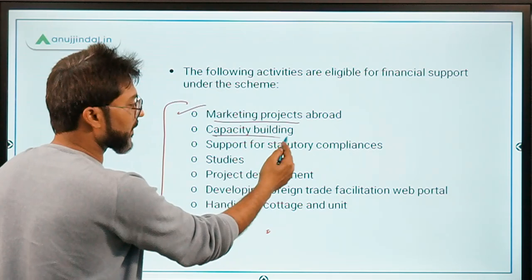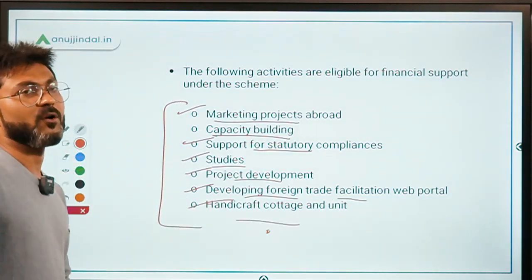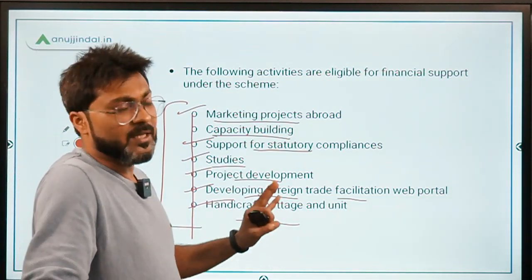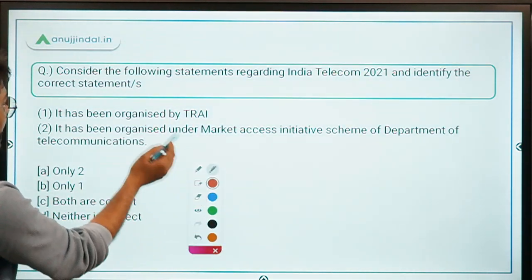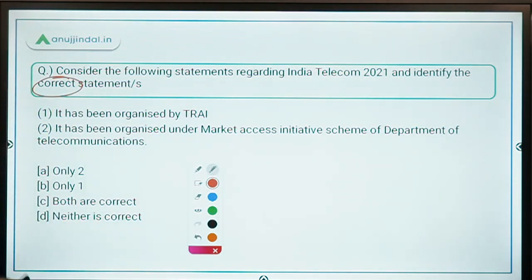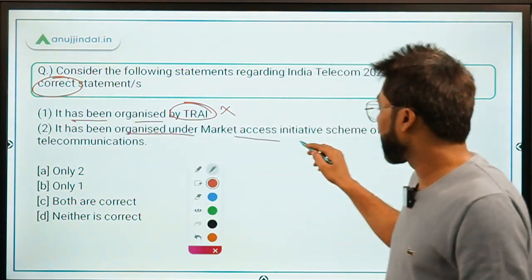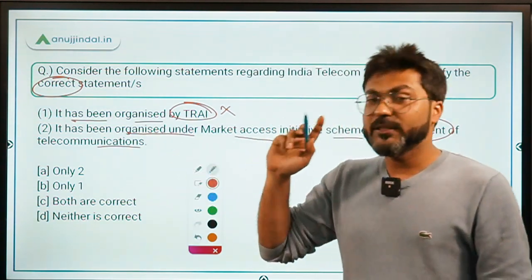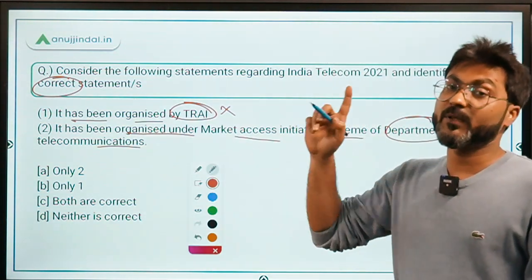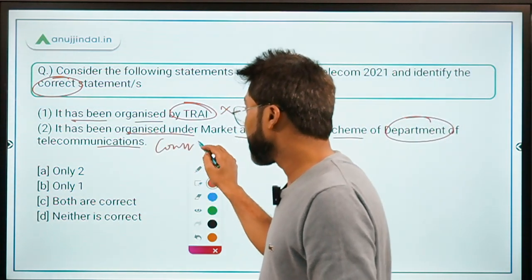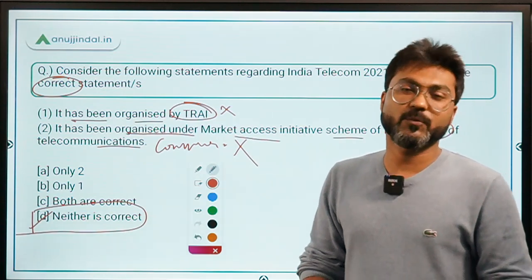Activities also include developing foreign trade facilitation web portals and handicraft support. You don't need to remember all these activity names — just basic understanding. Coming back to Question 3: Statement 1 says it was organized by TRAI — incorrect. Statement 2 says it was organized under the MAI scheme of the Department of Telecommunications — incorrect, as that scheme belongs to the Department of Commerce. Both statements are incorrect, so option B — neither — is the correct answer.